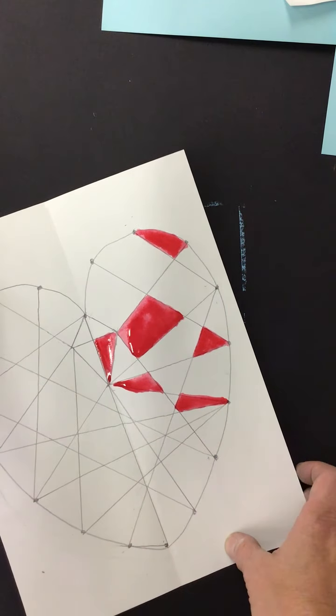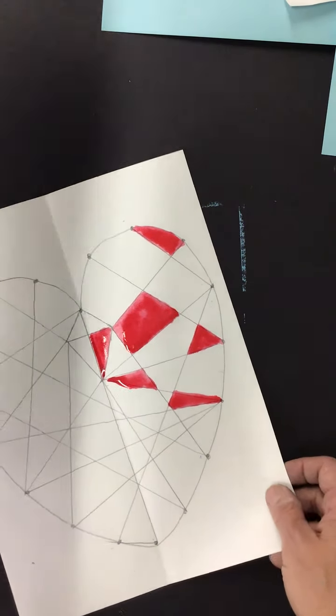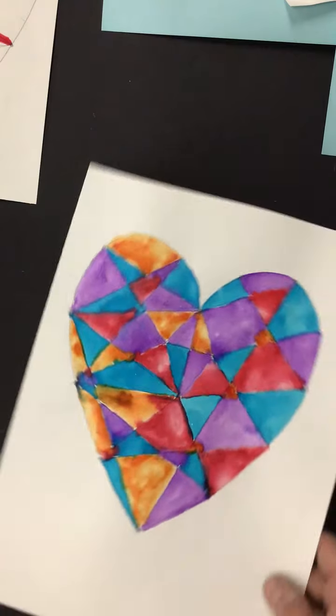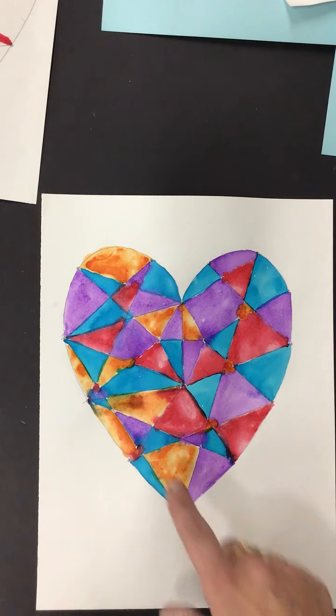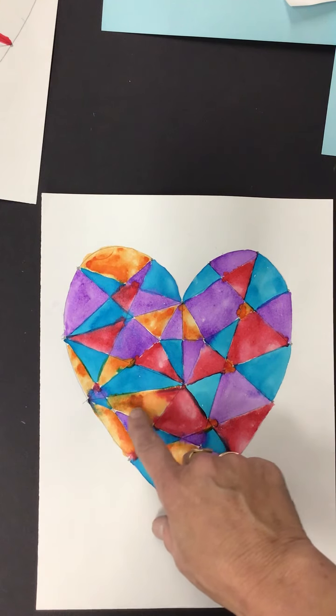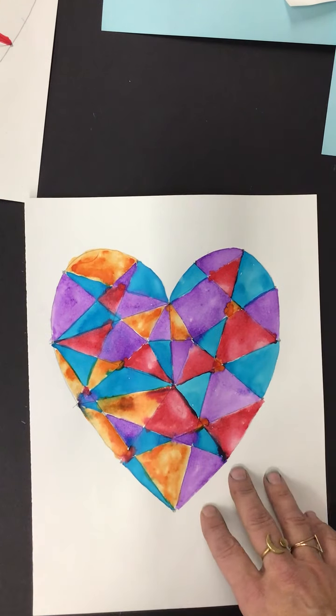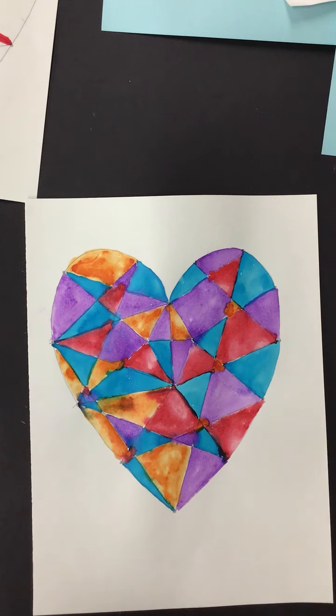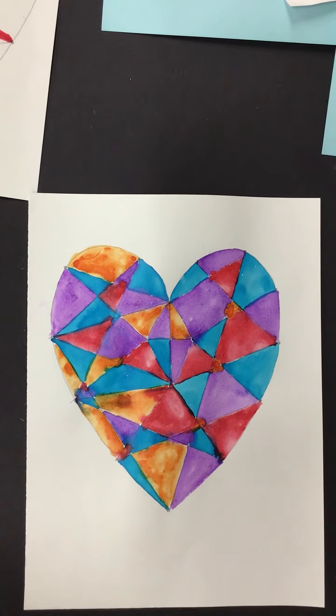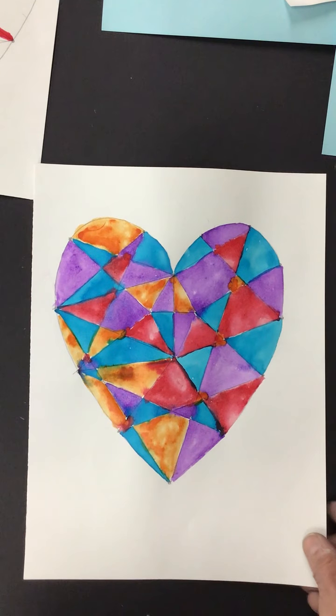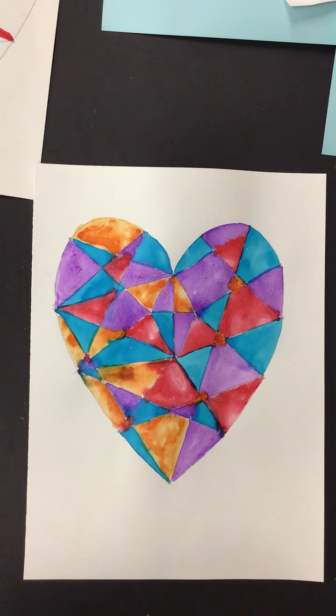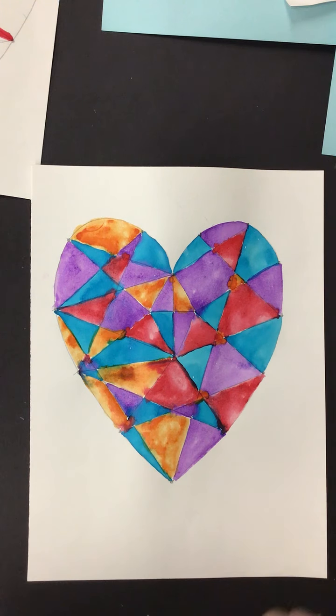Basically, keep on going with whatever material you're painting or drawing with. When you're done, you'll have something that looks similar to this. This one didn't dry in time, so it bled a little bit, but I kind of like the look of it. When you're done coloring it in, you're just going to take a picture of it and send it to my email. I really look forward to seeing your heart art. Hope you guys have a great time. Talk to you soon. Bye.